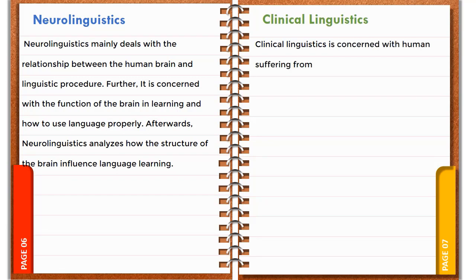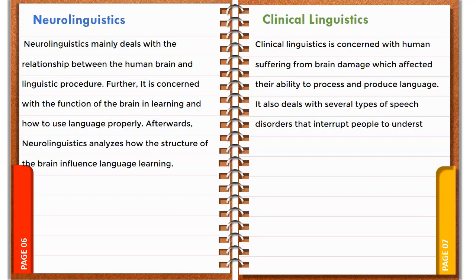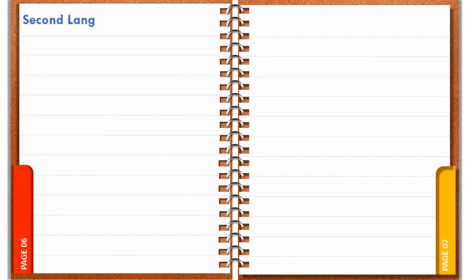Clinical linguistics is concerned with humans suffering from brain damage which affects their ability to process and produce language. It also deals with several types of speech disorders that prevent people from understanding and speaking language.